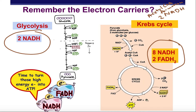In specific numbers, from one glucose you get two NADH from acetyl-CoA formation, two NADH from glycolysis, and eight NADH and two FADH from the Krebs cycle. You wouldn't need to memorize the numbers, but just know that you get a lot of NADH in all those sub-steps, and FADH comes in only during the Krebs cycle.